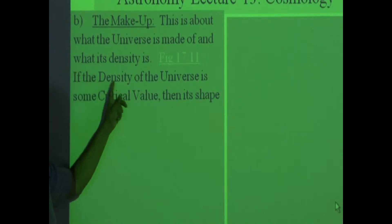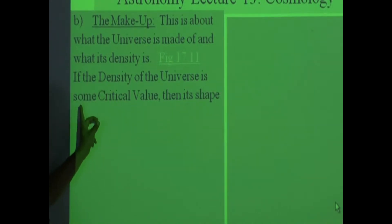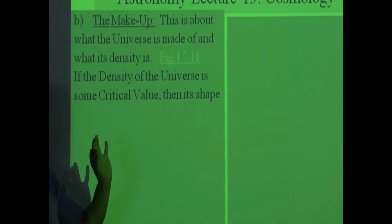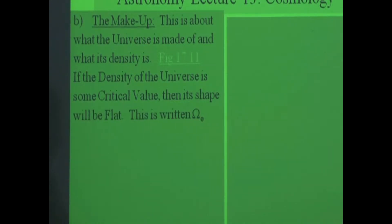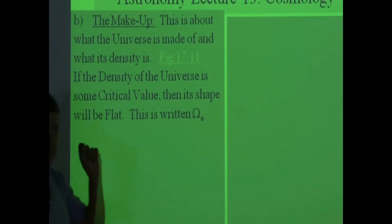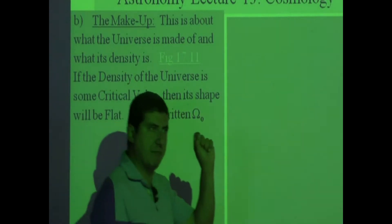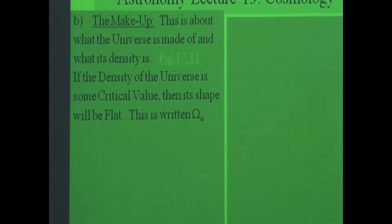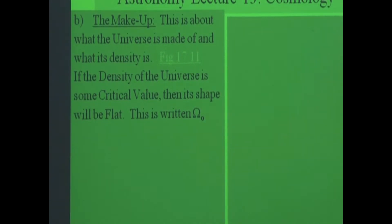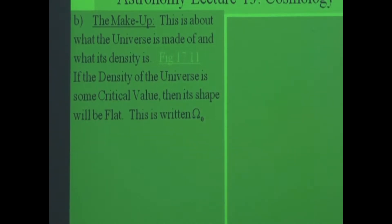If this density is equal to some critical value, then the shape of the universe will be flat. The density that makes up all the matter in the universe — dark matter and everything — determines whether the shape of the universe is flat, positively curved, or negatively curved.